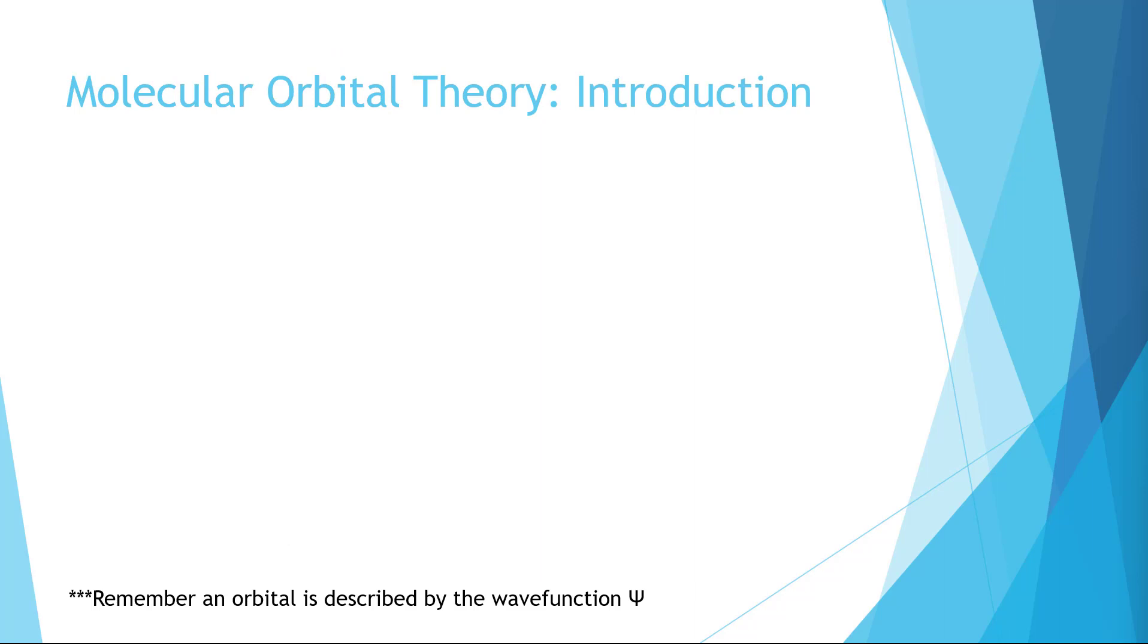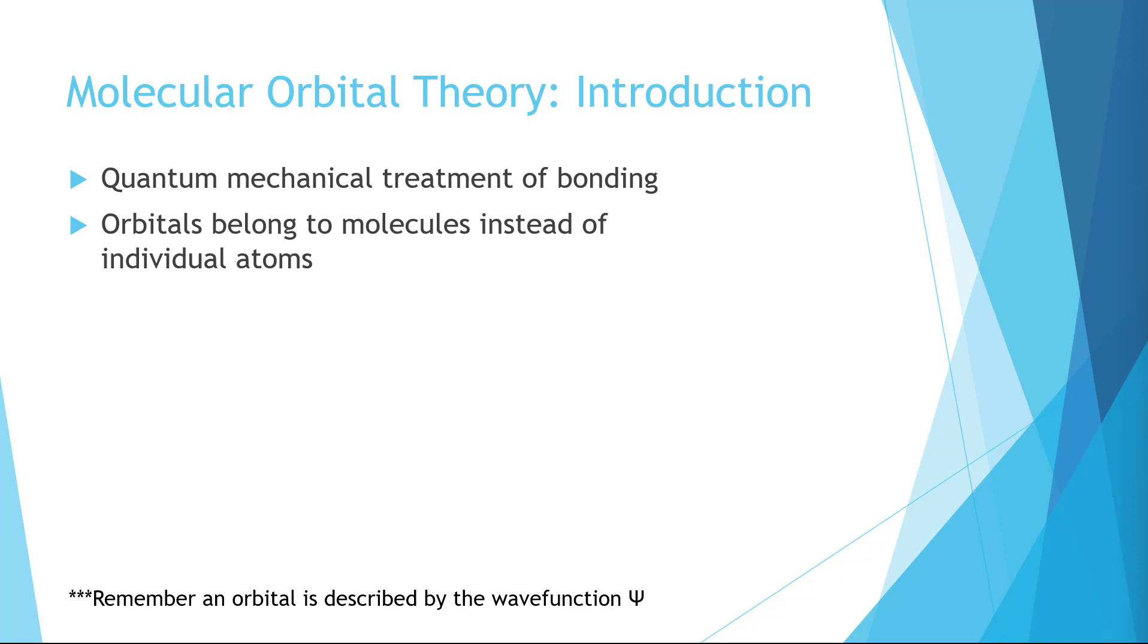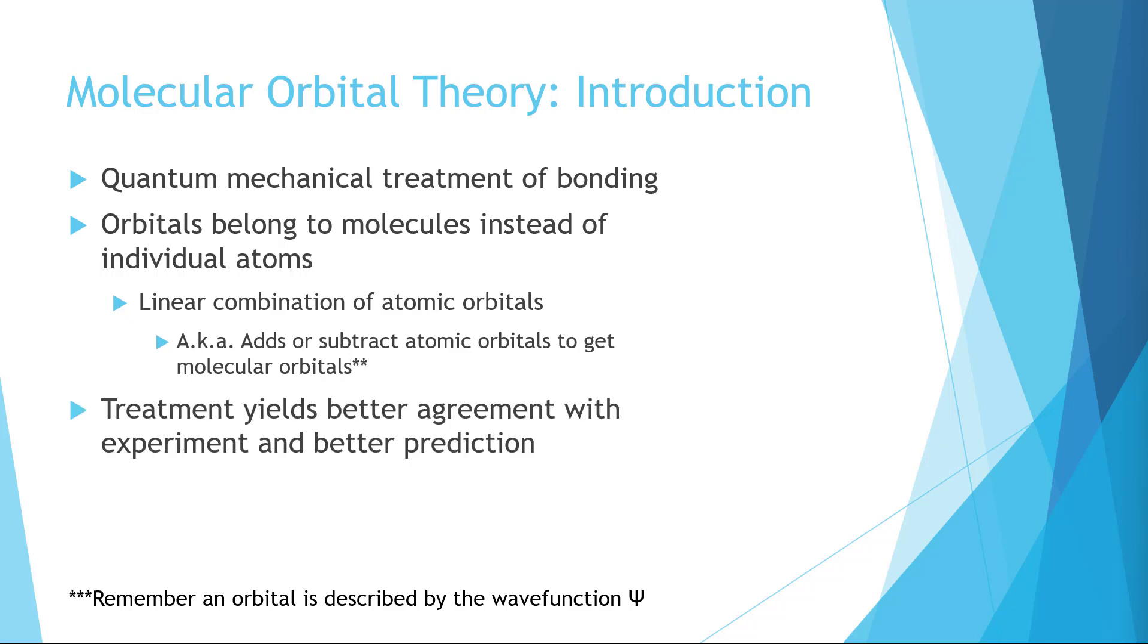So what is molecular orbital theory, or MO theory for short? This is the quantum mechanical treatment of bonding. It uses combinations of the wave functions that we discussed earlier in the course to determine new orbitals, which then can create bonds. As with earlier chapters, we aren't going to do the math ourselves, but rather use the completed math to help us model what is happening.